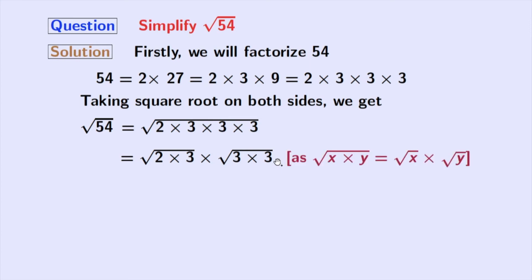Here, we have used the rule of square root of x times y is equal to square root of x times square root of y. Here, x is 2 times 3 and y is 3 times 3.